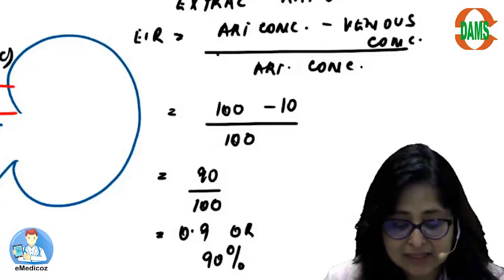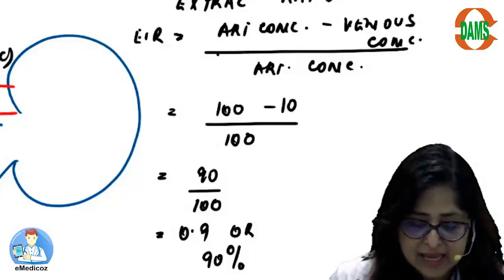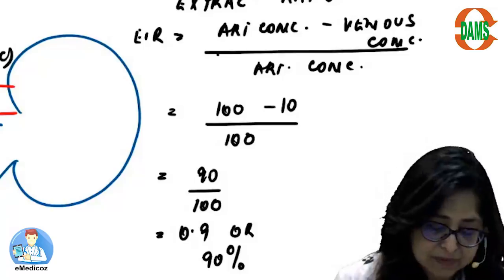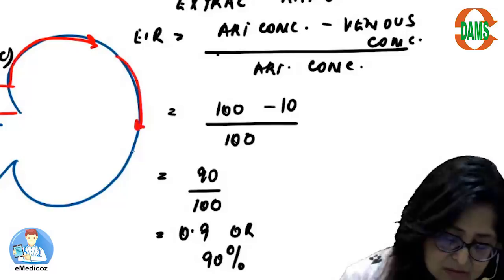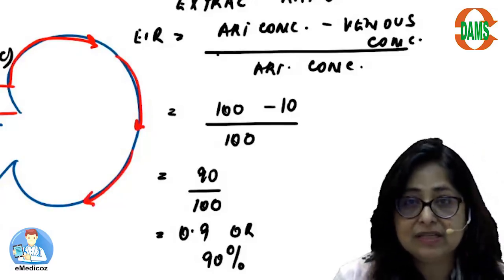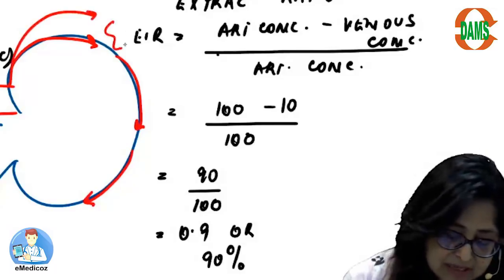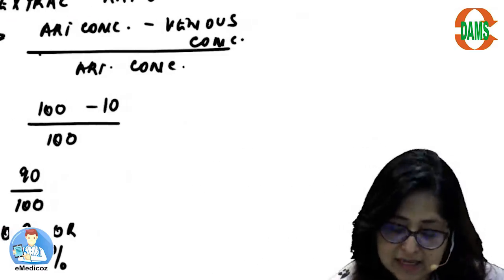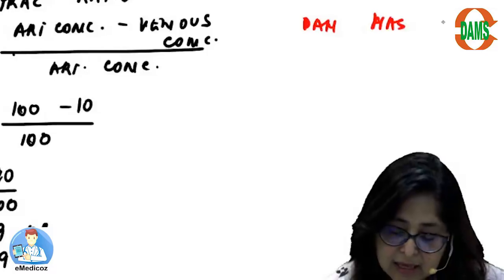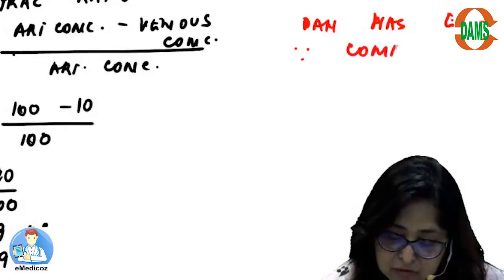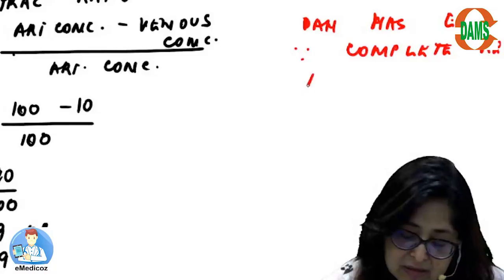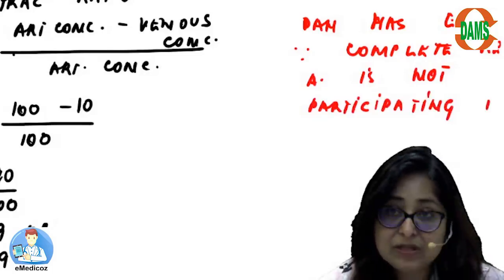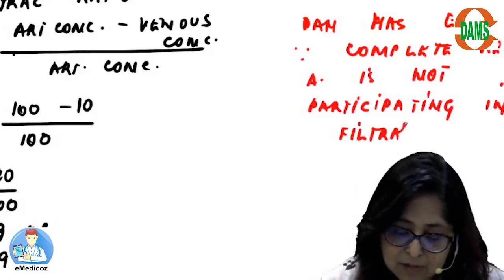The question arises: why does para-aminohippuric acid have an extraction ratio? That is pretty simple to understand — the complete renal artery blood is not participating in filtration. A small percentage of the renal artery blood goes towards the renal capsule; after all, the renal capsule is also living tissue and needs a blood supply. So a small amount goes towards the capsule and the adipose tissue which surrounds the kidney, and this para-aminohippuric acid will be returned in the renal vein.